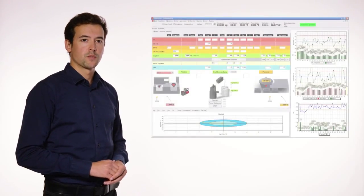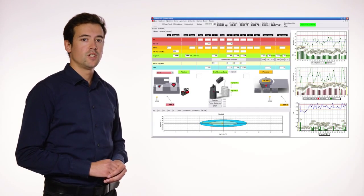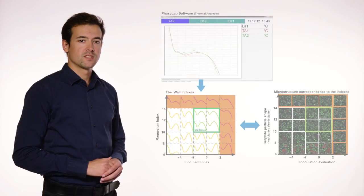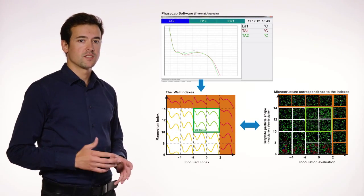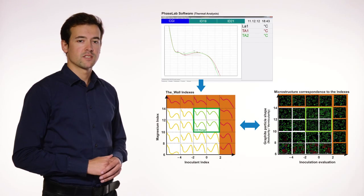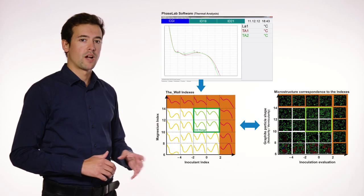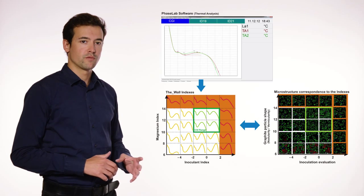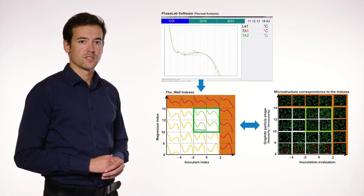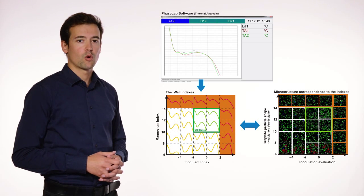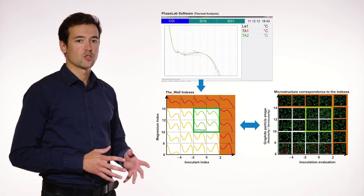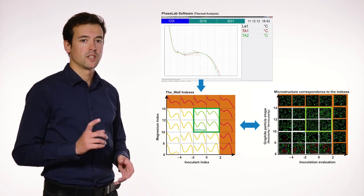The CGI Navigator is the core software of our system. It collects data from all measurement equipment, such as temperature measurement lenses, thermal analysis, and spectrometer. It knows the product specification from the master data of the OCC Foundry Information System. Based on its integral metallurgical know-how, it calculates the magnesium and inoculant indexes directly from the thermal analysis curves derived from the Phaselab software. With this information and information on previous production cycles, it can then calculate the needed core wire additions, as well as the bulk additions, to have the treatment made in only one step.